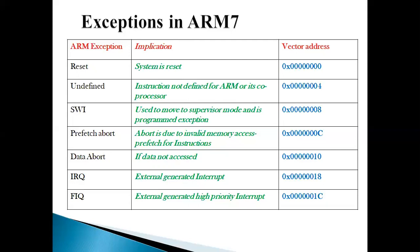Prefetch abort occurs when there is an invalid memory access for an instruction. It is not that the instruction is invalid or unrecognized — that would be undefined. Invalid memory access means: suppose we know that there is a virtual memory and a physical memory. There is a mapping between them. If we are referring to an instruction that was previously mapped to a physical address but has now been moved to secondary memory, there will be a prefetch abort because that memory address is not physically present though the virtual address may exist.